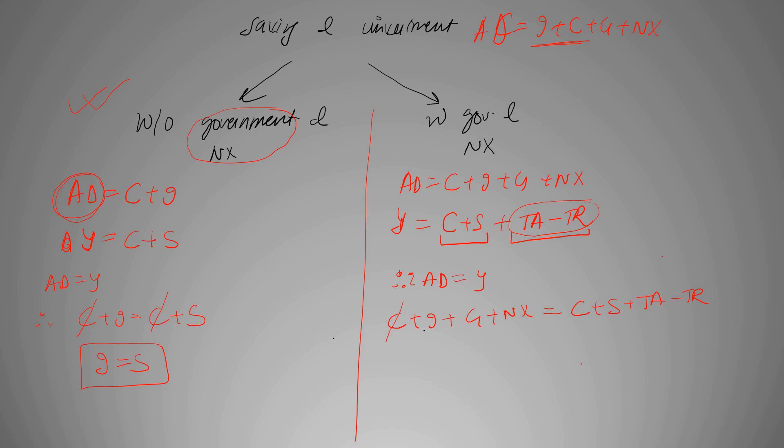Canceling C, we get I is equal to S plus TA minus TR minus G minus NX. When government and net exports are considered in an economy, this is going to be our equilibrium level. This can also be referred to as corn economy.